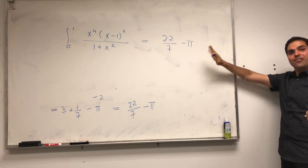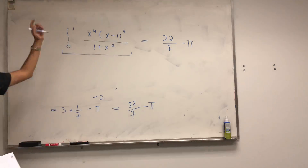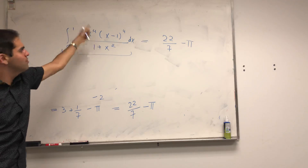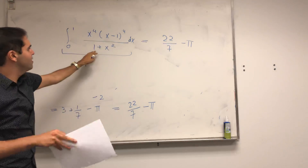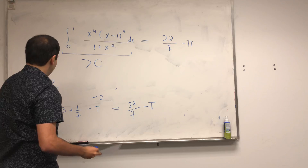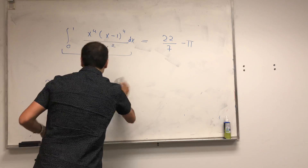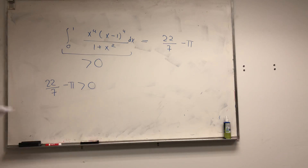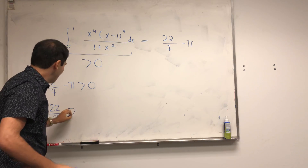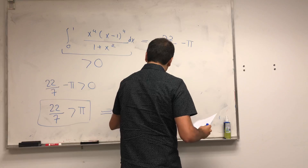Now, this integrand is a positive function: x to the 4th is positive, x minus 1 to the 4th is positive, and 1 plus x squared is positive. So the integral is greater than 0, and therefore 22/7 minus pi is greater than 0. Therefore, 22/7 is bigger than pi, or in other words, pi is less than 22/7. So European pi day is better than pi day — but both are delicious in my opinion.